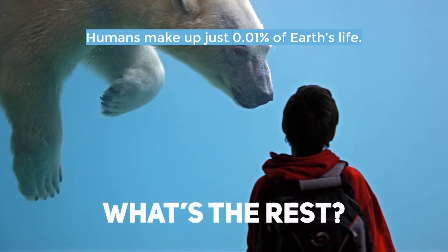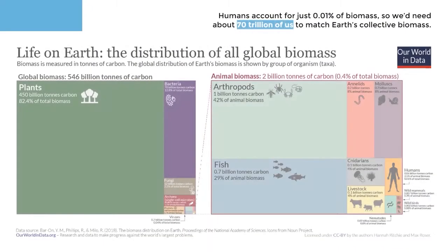So what's the rest? Plants dominate life on Earth — they account for more than 82 percent of biomass. In second place is the life we cannot see: tiny bacteria sum up to 13 percent. Whilst our perceptions are often focused on the animal kingdom, it accounts for only 0.4 percent. Humans account for just 0.01 percent of biomass, so we'd need about 70 trillion of us to match Earth's collective biomass.